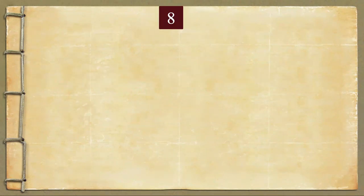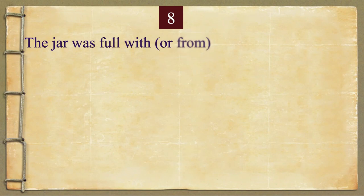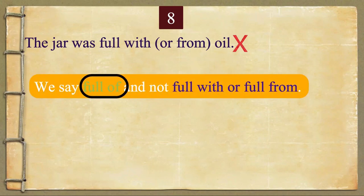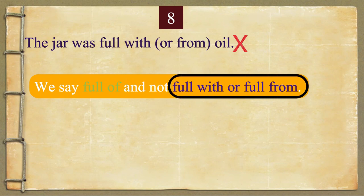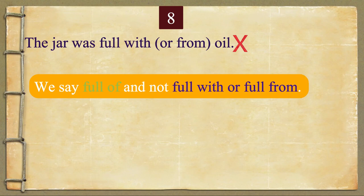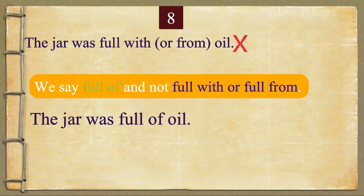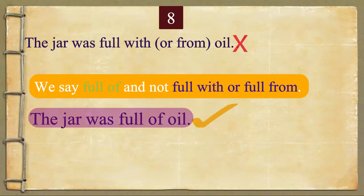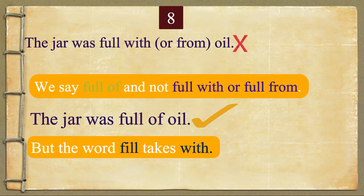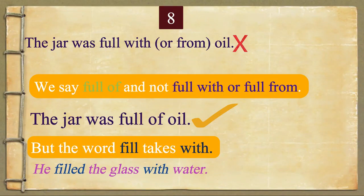Number 8 is: the jar was full with or from oil — this is incorrect. We say full of, and not full with or full from. Please repeat the correct sentence after me: The jar was full of oil. Please note, the word fill takes with — for example: he filled the glass with water.